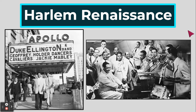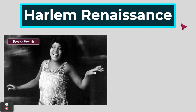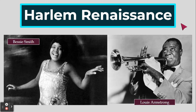Here's an example of a jazz quartet — this is Duke Ellington playing. You can see jazz has lots of wind instruments and it's a very upbeat style of music. Other musicians include Bessie Smith and Louis Armstrong. These people weren't just famous in Harlem — they became popular across the United States in the 1920s.